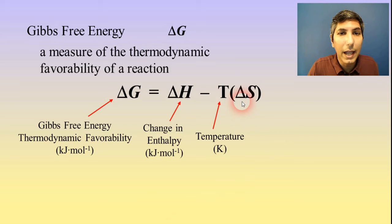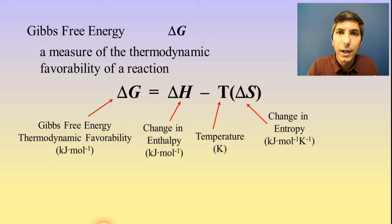Delta S is the change in entropy. Now you might remember from an earlier video that entropy is normally given in joules per mole per kelvin. Well in order to make the math work out, we have to have consistent units. And so we're going to have to convert to kilojoules per mole per kelvin in order to make everything work out.